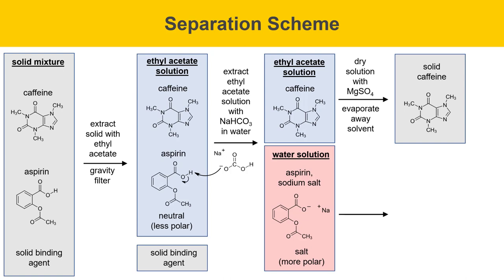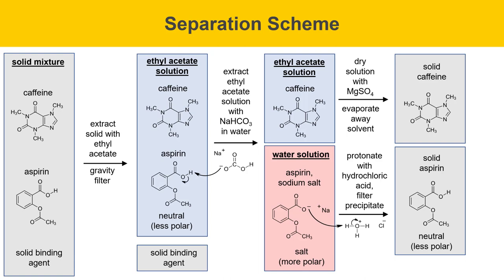Finally, we turn our attention to the water solution of aspirin-sodium salt and treat it with hydrochloric acid, then filter the resulting precipitate. When treated with HCl, the negatively charged oxygen of the sodium salt abstracts a proton off H3O+, giving neutral aspirin, which is less polar and precipitates out of the water solution. Filtering gives us our third isolated solid. This is how we get all three solid materials from the Anacin tablets: solid binding agent, solid caffeine, and solid aspirin.